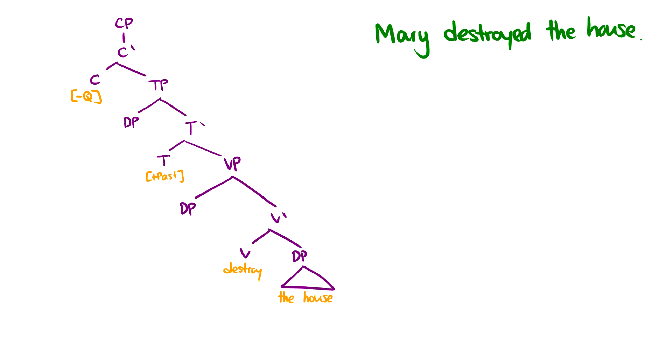Let's take a look at the sentence, Mary destroyed the house. So we have the head of the verb destroy, and we have the house as its object. And the house is generated as a complement of V, so it's essentially generated very close to V.